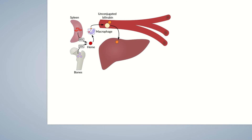This conversion occurs in the liver and involves four steps. First, there's bilirubin uptake by the hepatocyte. Second, it conjugates with glucuronic acid, making it soluble in water. Third, the now water-soluble bilirubin is secreted into the bile canaliculi by a membrane transporter. In the final step, bilirubin is excreted via the bile ducts.